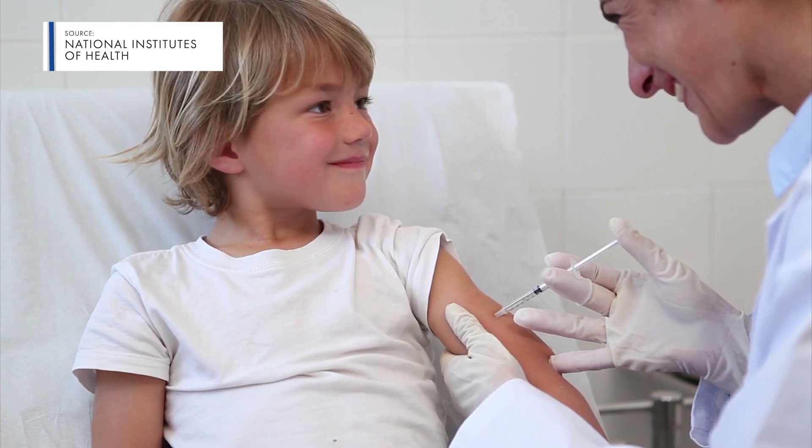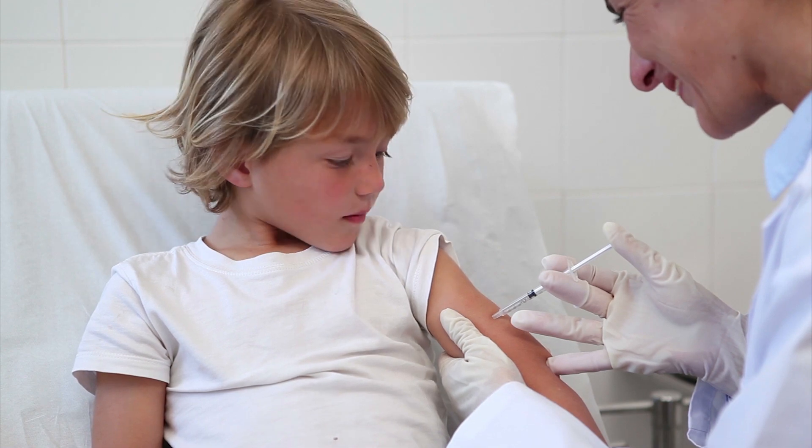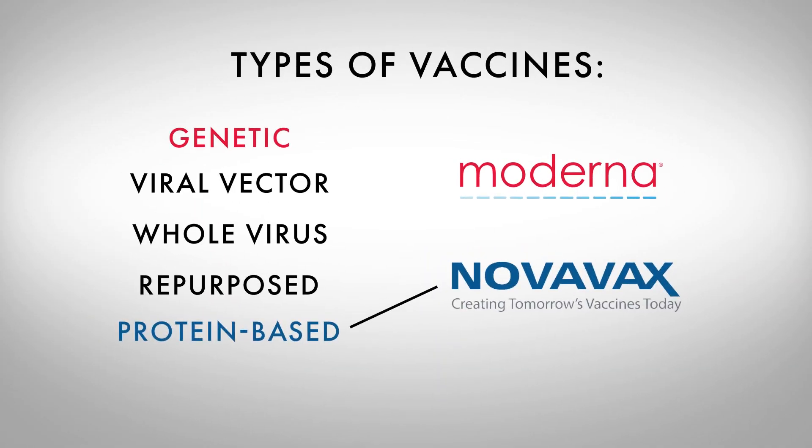If you've had a flu shot, you've likely had a protein-based vaccine. The Moderna vaccine, which was developed with help from UT Austin, is a genetic vaccine.